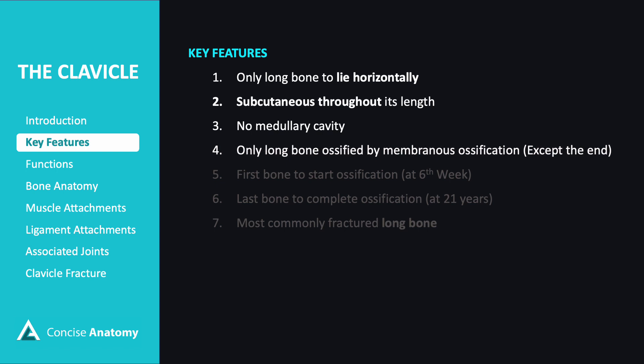The clavicle primarily ossifies through membranous ossification, also known as intramembranous ossification. This process involves the direct conversion of mesenchymal tissue into bone tissue without the intermediate step of a cartilage model. Ossification of the clavicle begins remarkably early in fetal development, typically around the sixth week of gestation. While ossification of most long bones is largely complete by the end of adolescence, the clavicle continues to ossify well into early adulthood, typically completing around the age of 21 years, making it one of the last bones in the body to reach full maturity.